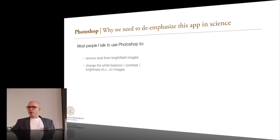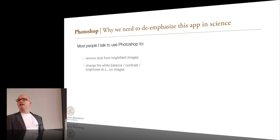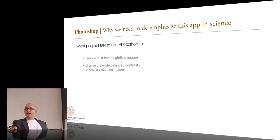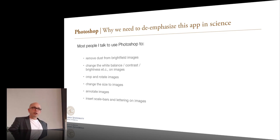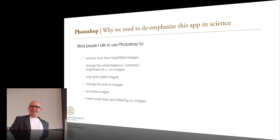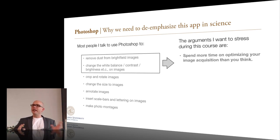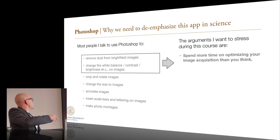What I propose is that the steps from your raw data collection to your final montage should be as short as possible. You don't want twelve iterations of image adjustments before placing an image into your final montage. This is one reason why I want to de-emphasize Photoshop as a tool in science. It's the first tool people use, but I think it's the least useful of these tools and the one we should use most restrictively. When I ask people what they use Photoshop for, it mainly has to do with image adjustments for scientific data — adjusting white balance, contrast, brightness, cleaning up images, and also cropping, rotating, changing size, annotating, and inserting scale bars.